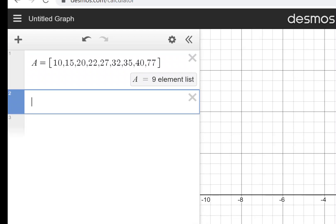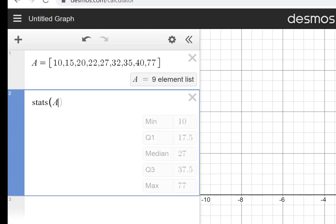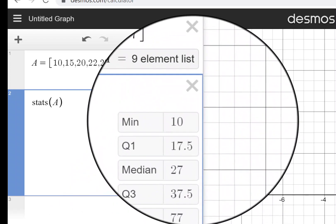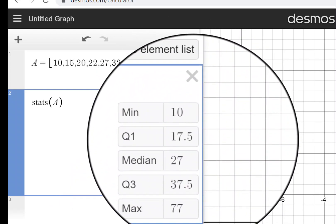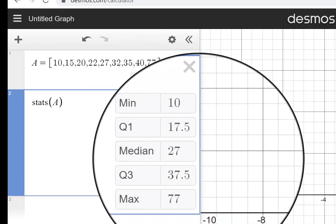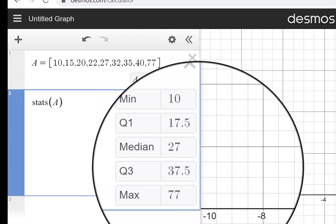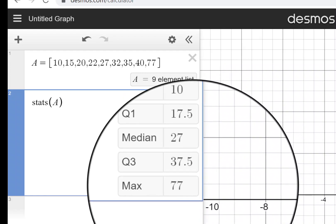To get Desmos to tell me the quartiles, I just type in the word stats, S-T-A-T-S, and then I put in A in parentheses. Desmos is case sensitive, so you need to make sure you use a capital A to refer to your capital A list. Immediately, what I see is that the minimum value in our list was 10, the first quartile is 17.5, the median is 27, the third quartile is 37.5, and our maximum value is 77.